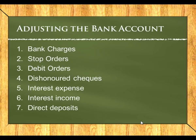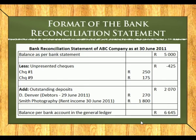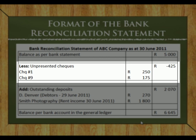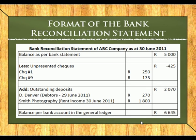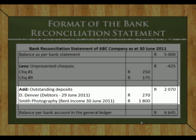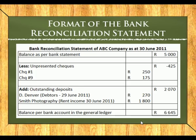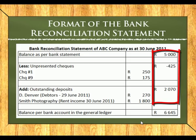Let's look at the format of the bank reconciliation statement. It is always shown as at a specific date. We always start off with the final balance on our bank statement, then take away all the outstanding or unpresented checks — showing the details such as the check number. We then add on all our outstanding deposits, which is money that we have received but has not yet gone through the bank account. The balance of those items must equal the balance per our bank account in the general ledger.